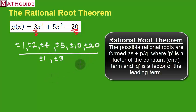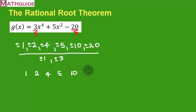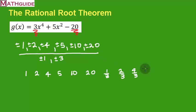So this includes fractions as well. If we take all of these factors in the numerator and divide them by 1, we get the same factors: 1, 2, 4, 5, 10, and 20. Now let's divide them all by 3. So 1 divided by 3 is 1 third. 2 divided by 3 is 2 thirds. 4 divided by 3 is 4 thirds. 5 divided by 3 is 5 thirds. 10 divided by 3 is 10 thirds. And 20 divided by 3 is 20 thirds.